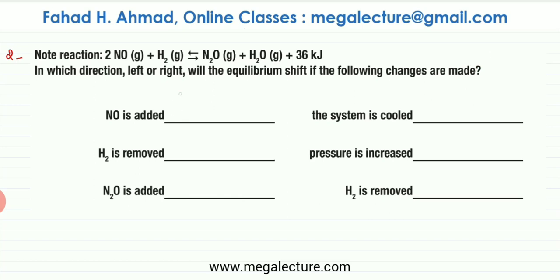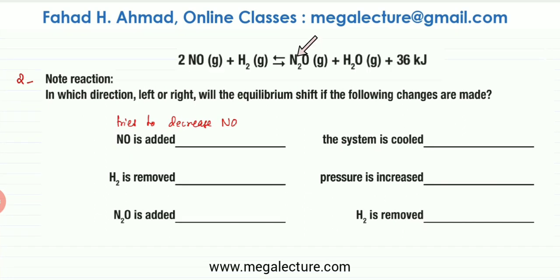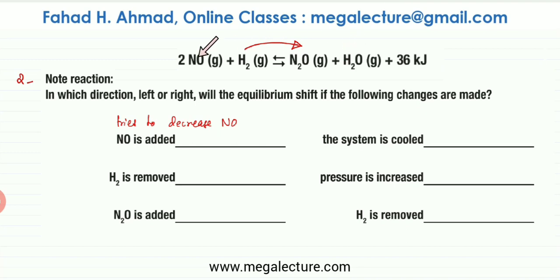The first change is that NO is added. Le Chatelier's principle says it's going to try to decrease NO. The forward reaction is going to be favored so that all the NO gets used up and converted into products, resulting in lesser NO. So if you try to increase NO, it will try to decrease NO — the equilibrium will shift to the right-hand side.